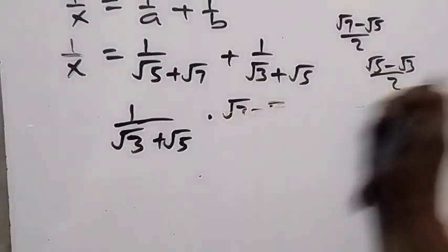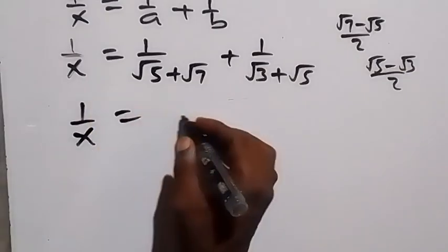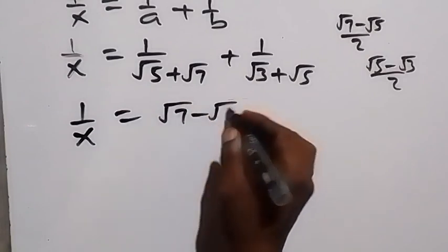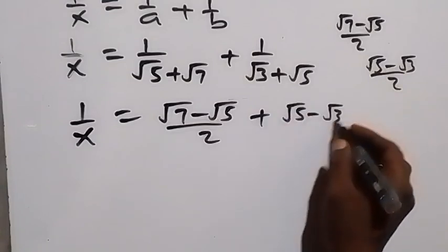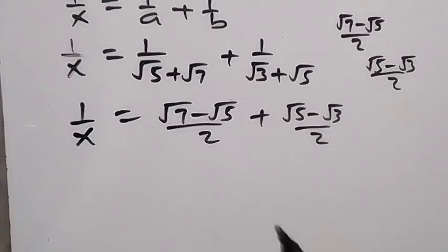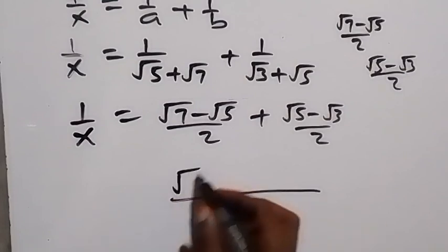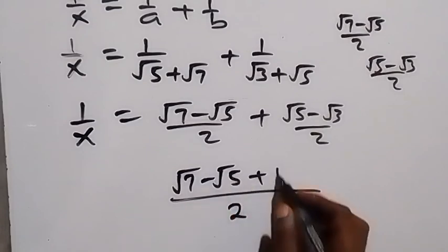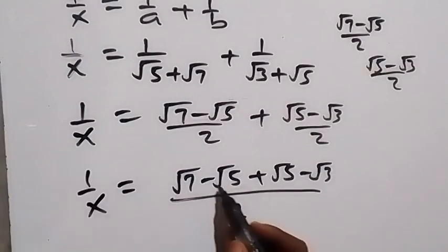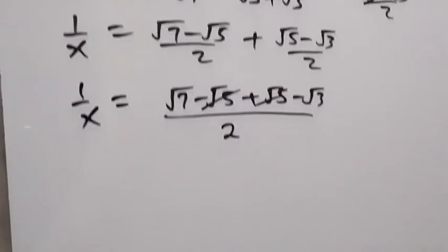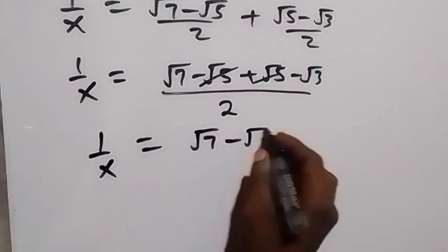Rewriting the right-hand side, 1/x equals (√7 − √5)/2 plus (√5 − √3)/2. With a common denominator of 2, we have (√7 − √5 + √5 − √3)/2. The √5 terms cancel, giving 1/x = (√7 − √3)/2.